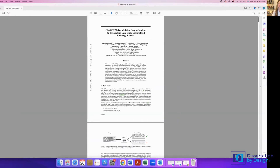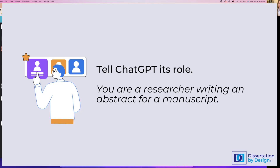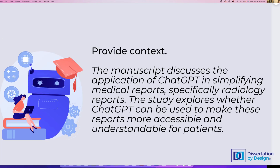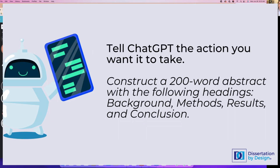I'm sharing my screen. This is the article we are going to use today, and this is the abstract generated by the author — I'm using that as my benchmark, my gold star. You want to first tell ChatGPT its role: in this case, you are a researcher writing an abstract for a manuscript. You then want to provide context: the manuscript discusses the application of ChatGPT in simplifying medical reports, specifically radiology reports, and explores whether ChatGPT can make these reports more accessible for patients. Then tell ChatGPT what action to take: construct a 200-word abstract with the headings Background, Methods, Results, and Conclusion.